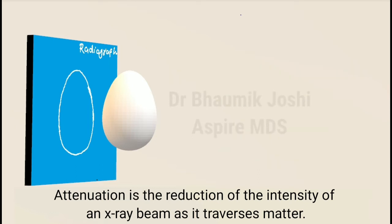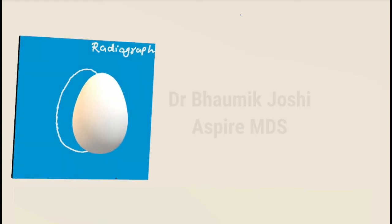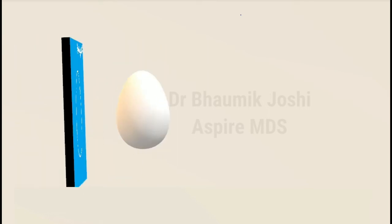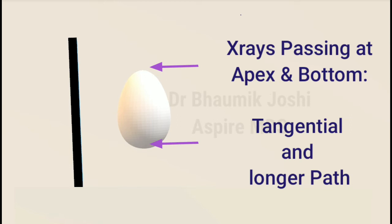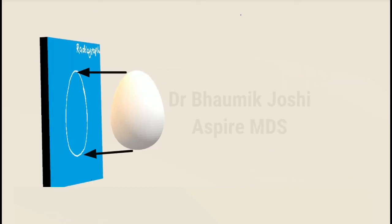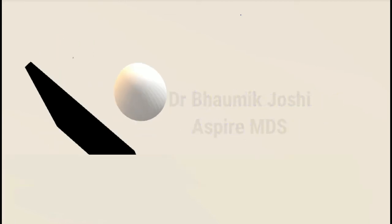This has been explained in detail in the video on latent image formation. In the radiographic image of the egg, there are four areas — the top, bottom, and the curved peripheries — which appear radio-opaque. The first two are the apex and bottom of the egg. As you can see, the x-rays passing through this area have a tangential and longer path to cross through the egg, and hence they have more attenuation of x-ray photons.